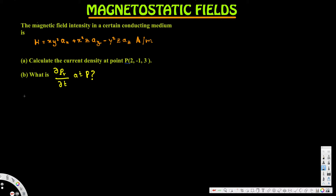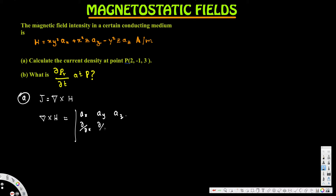For part a, we need the current density. Current density J is given by del cross H. We have H, so we cross it with the del operator. Setting up the determinant, we have ax, ay, az across the top, then the partial derivatives with respect to x, y, z, and then the H components Hx, Hy, Hz.